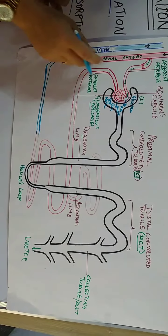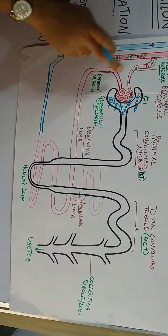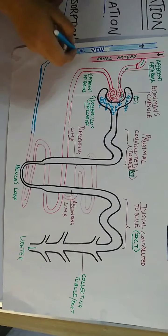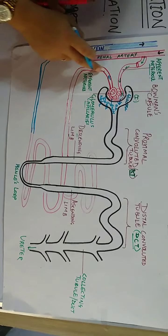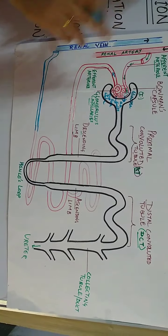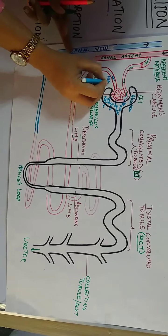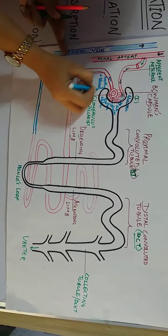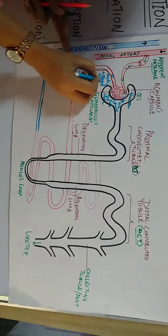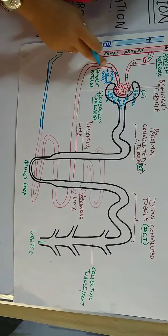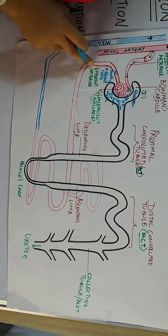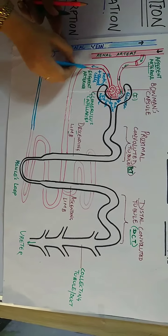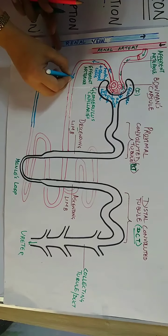Substances in the blood with too high a molecular weight — such as proteins, WBCs, RBCs, and platelets — remain behind in the efferent arteriole. Their molecular size is large so they remain in the blood, which is an important component of the body, and these continue circulating in the efferent arteriole.